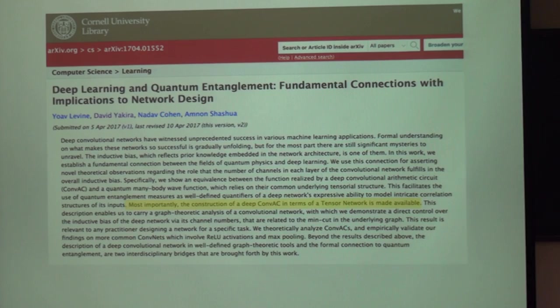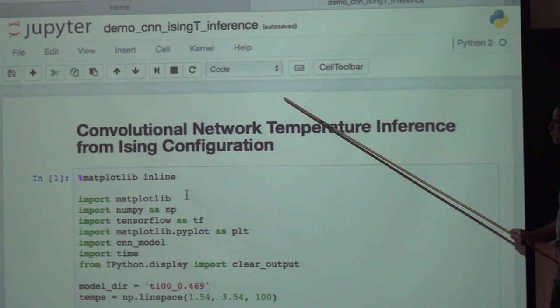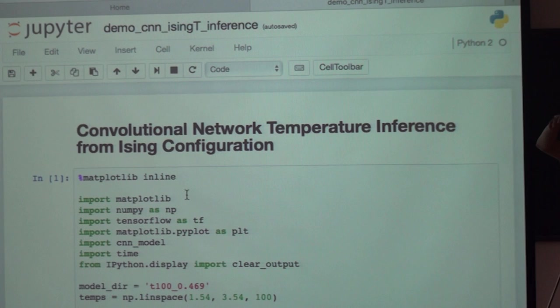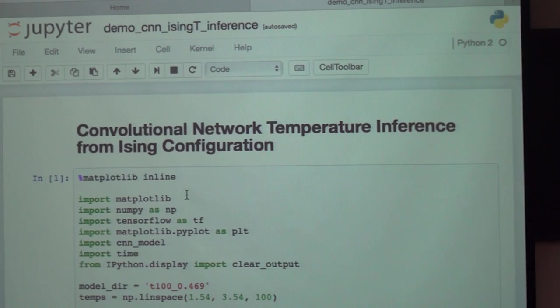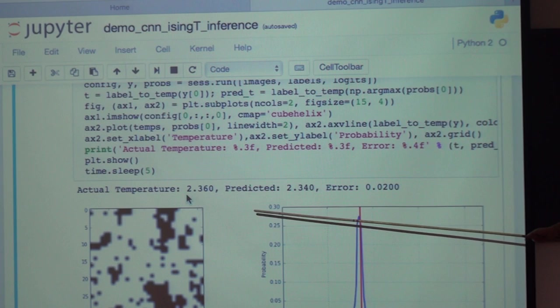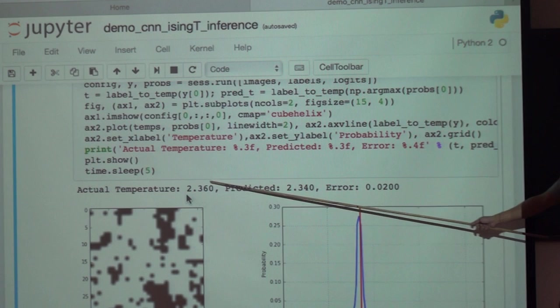Here is a demo. Basically we train a convolution network with different temperature data. I feed in the image and I train the neurons. Then I take these neurons and I give it a configuration and see if the neuron can predict the temperature. Here's the simulation. What you're gonna see is you'll see an image. Here, this red line will be the real temperature such that this configuration is generated, and there will be a probability distribution. The peak will be our prediction.